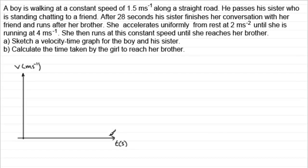Now we've got the boy walking at 1.5 meters per second. So we'll have a line here going at a constant velocity here, 1.5 meters per second. Let's just mark that in. We'll put that in red, I think, up here, 1.5.